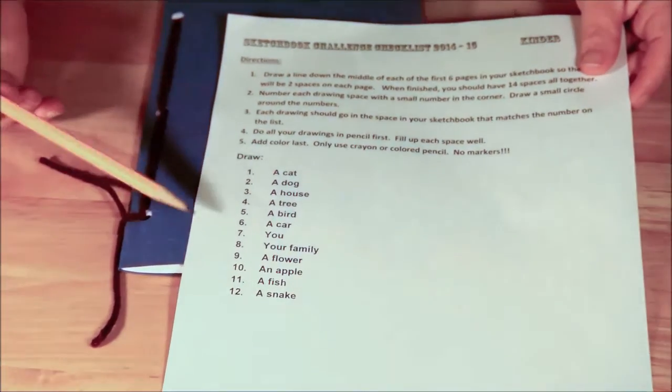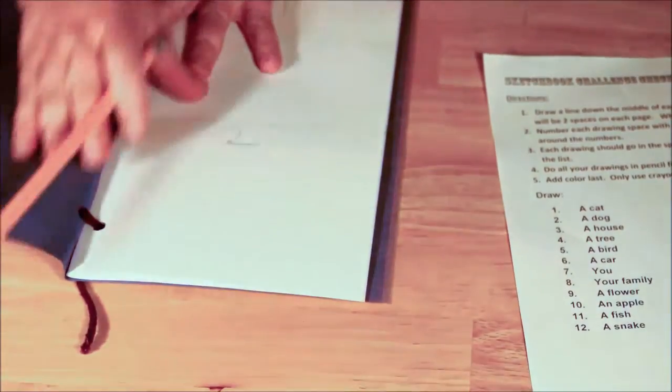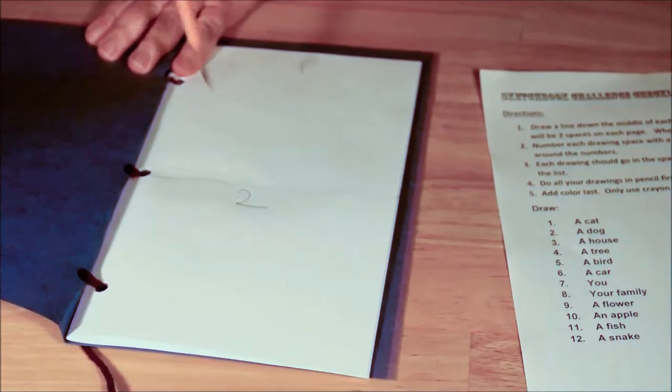Number two, a dog, and so on. You're going to look at the number. If number one is a cat, you're going to turn to the first page where it says number one.